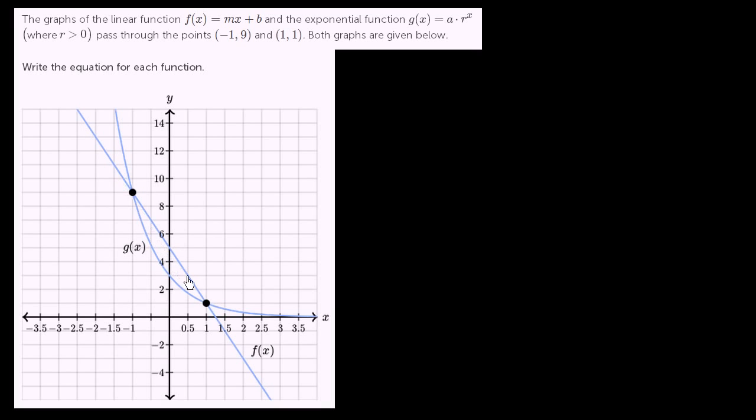This very clearly is the linear function, it is a line right over here. And this right over here is the exponential function. Given the fact that this exponential function keeps decreasing as x gets larger and larger, it's a pretty good hint that our r is going to be between 0 and 1. But let's use the data they're giving us, the two points of intersection, to figure out what the equations of these two functions are.